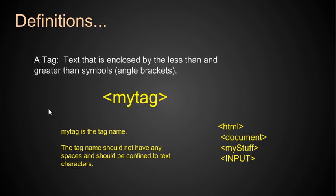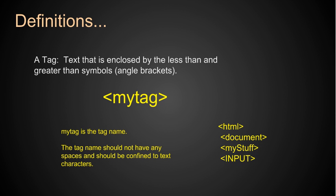Let's look at the definition of a tag. A tag is text enclosed by the less-than and greater-than symbols — angle brackets. This is an XML tag; 'my tag' is the tag name inside the tag. The tag name should not have any spaces and should be confined to text characters. For example: the tag name here is HTML, here it's 'document', here it's 'my stuff', here it's 'input.'